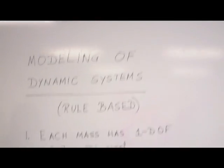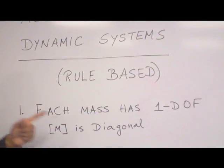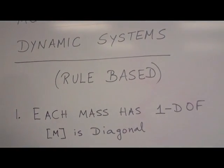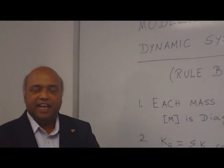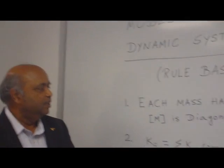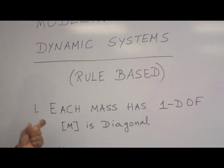So the rules are, first rule, each mass has one degree of freedom. That means if you have ten masses, you have ten degree of freedom. You have two mass, two degree of freedom. So the mass matrix is a diagonal matrix.